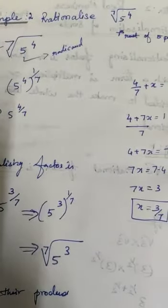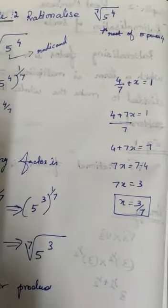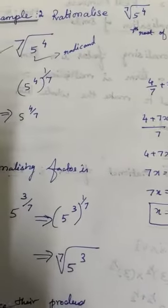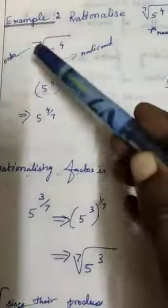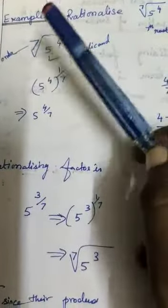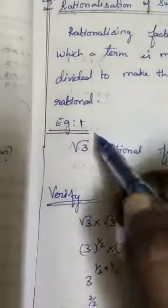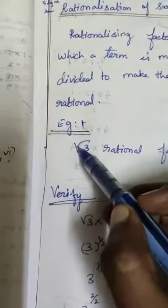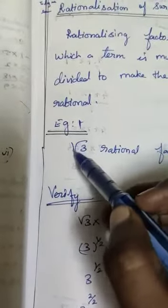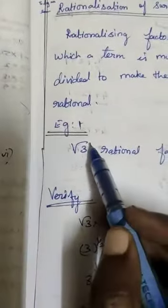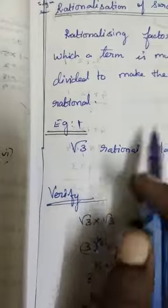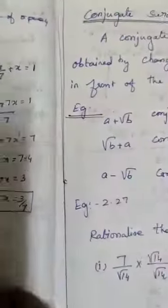Rationalize 7th root of 5 over 4. Here they're giving order as well as radical power. Before, they were giving only the order, because square root means it's a basic 2. But here the radical power is 1, so it's no problem.